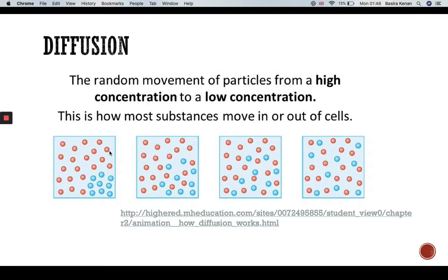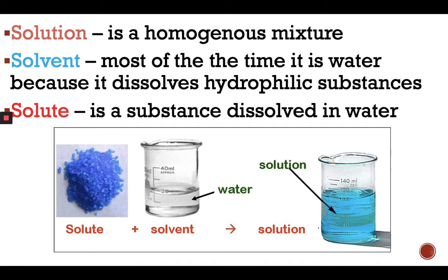You watched the diffusion video. It's a random movement of particles. For example, you want to make sweet water, you add sugar lumps into your tea and stir it in or wait for the sugar lumps to dissolve. Dissolving substances in water is called solution, and we call it diffusion. Here we have certain parts where we can define what is diffusion, solution, solvent, and solute.